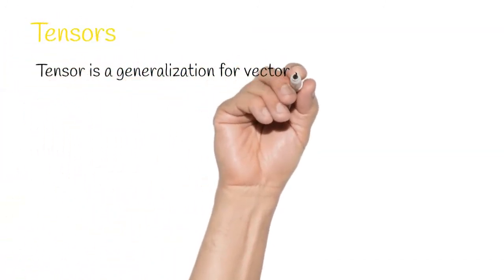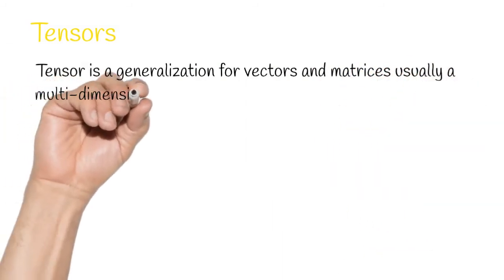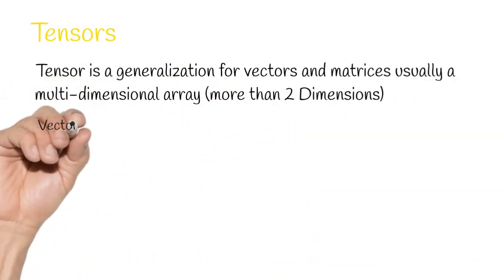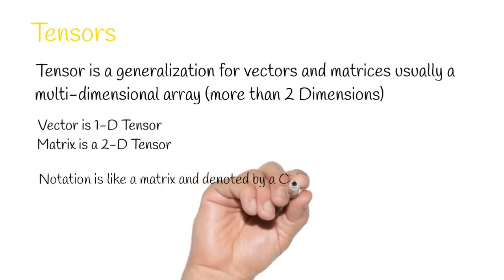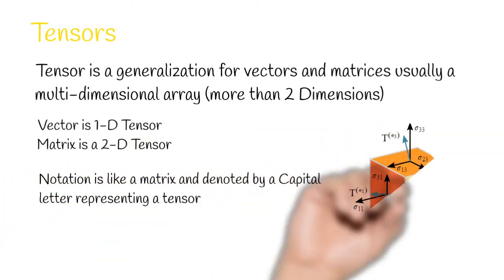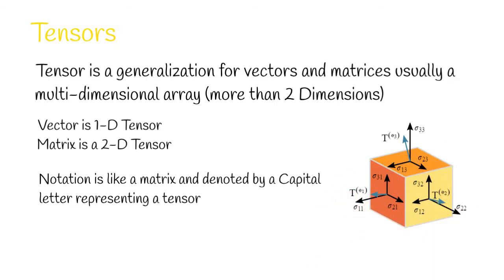Tensors are superset of what we saw earlier. It's a general term for vectors and matrices having more than two dimensions. So, we can say a vector is a one dimensional tensor. Matrix is a two dimensional tensor.